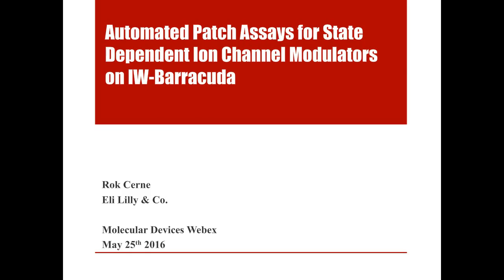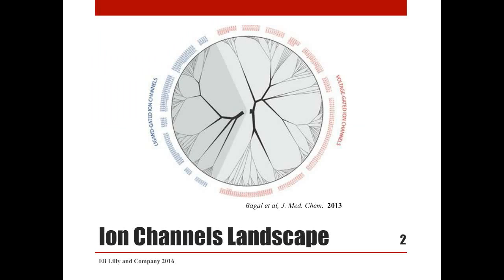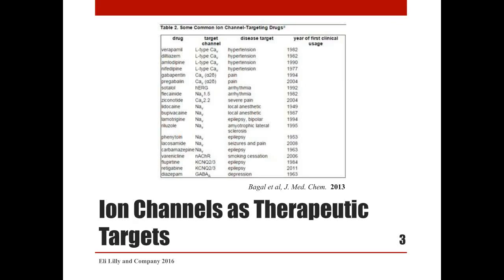There are approximately 300 genes encoding ion channels. Each gene may have hundreds of SNPs and mutations — some functionally irrelevant, and around 100 have been associated with channelopathies. In addition, ion channels can heterooligomerize and form complexes with associated proteins, which can in turn serve as drug targets. The complexity of potential drug-ion channel interaction is enormous.